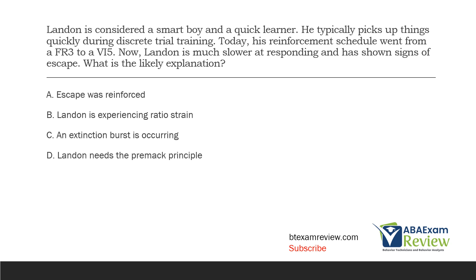Question three: Landon is considered a smart boy and a quick learner. He typically picks up things quickly during discrete trial training. Today his reinforcement schedule went from a FR3 to a VI5. Now Landon is much slower at responding and has shown signs of escape. What is the likely explanation? Landon's reinforcement schedule has changed — it's gone from a fixed ratio 3 to a variable interval 5, so they've started to fade out reinforcement.